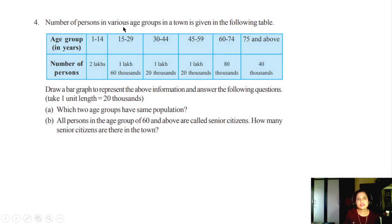Number of persons in various age groups in the town is given in the following table. Fourth problem it is. Age group in years: 1 to 14 years, 15 to 29 years, 30 to 44 years, 45 to 59 years, 60 to 74 years. Groups are made, and 75 and above, one group is made. Number of persons: 2 lakhs, 1 lakh 60,000, 1 lakh 20,000, 1 lakh 20,000, 80,000, and 40,000. Draw the bar graph to represent the above information and answer the following questions.